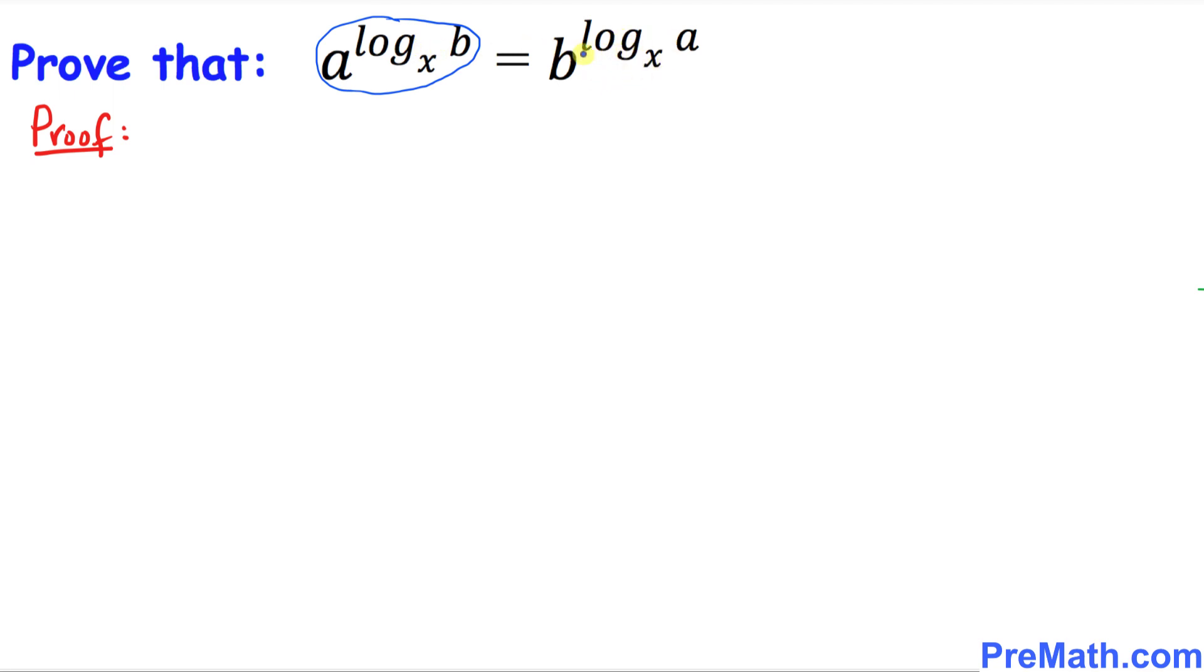I'm going to write the left hand side: a to the power of log base x of b. And I want to call this M, equal to this. Why did we do that? Because this is for our convenience, that is going to help us a lot.